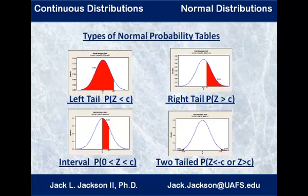You can take advantage of what you know about the symmetry of the curve and the fact that you get an area of a half from negative infinity up to the mean, or from the mean up to infinity. You'll also see tables done as an interval, usually starting at zero with positive values for C. Sometimes you'll even see a two-tailed table where a certain area is split evenly among the two tails.